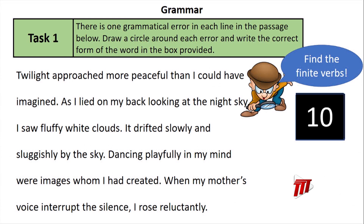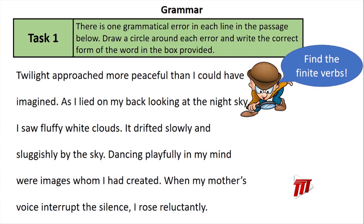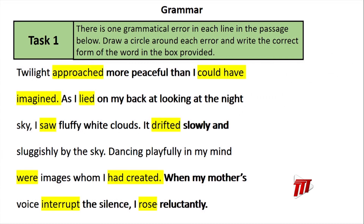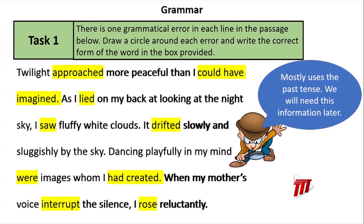The grammar passage reads: 'Twilight approached more peaceful than I could have imagined. As I lied on my back, looking at the night sky, I saw fluffy white clouds. It drifted slowly and sluggishly by the sky. Dancing playfully in my mind were images whom I had created. When my mother's voice interrupts the silence, I rose reluctantly.' The finite verbs are: approached, could have imagined, lied, saw, drifted, had created, interrupt, rose. This passage mostly uses the past tense — we will need this information for the answers.